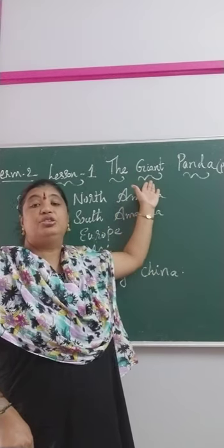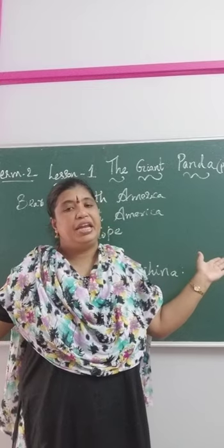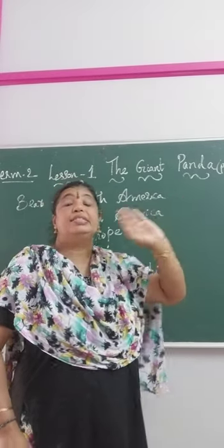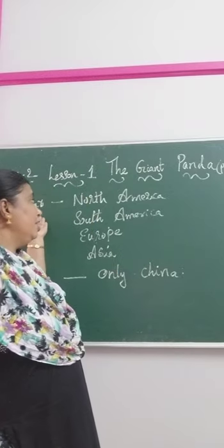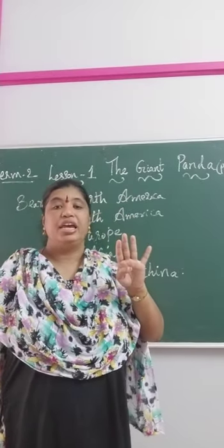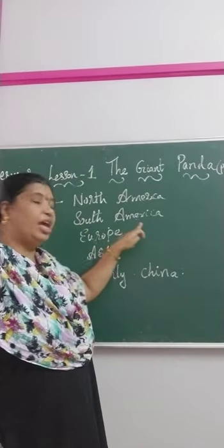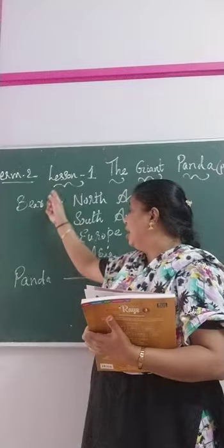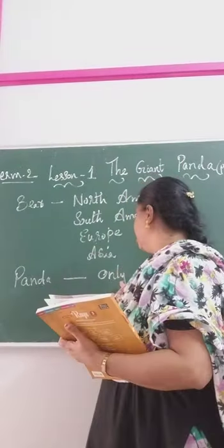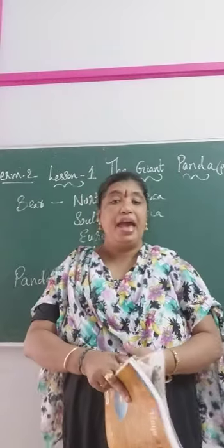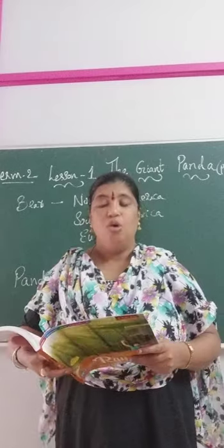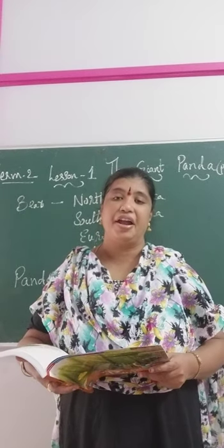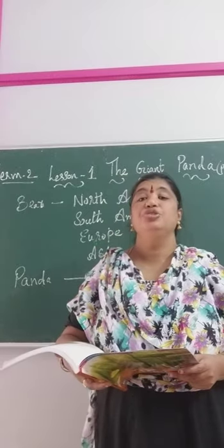What do you mean by the word giant? Giant means very big, huge. Panda is the name of an animal. It looks like a bear. Generally, we see bears in 4 continents: North America, South America, Europe and Asia. But the giant pandas are seen only in China. They look like a bear but they are not a bear at all. Giant pandas are black and white Chinese bears. They are the Chinese bears. What is the color of panda? It is both black and white.